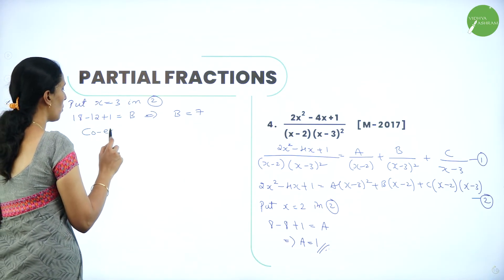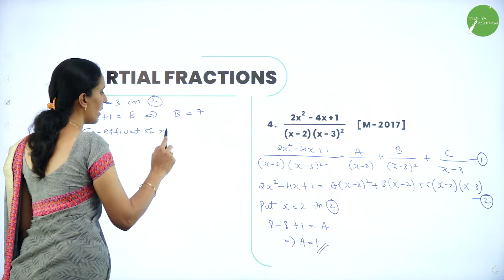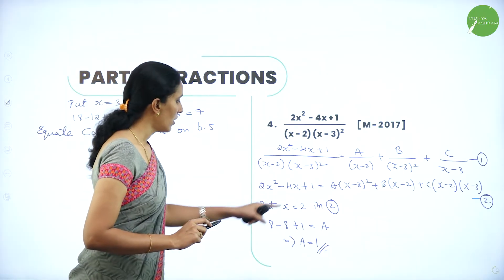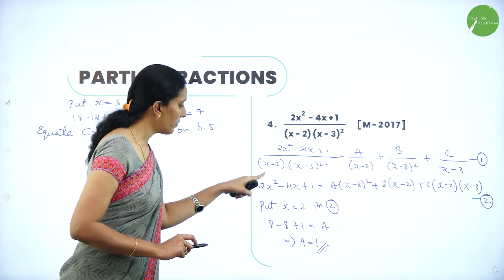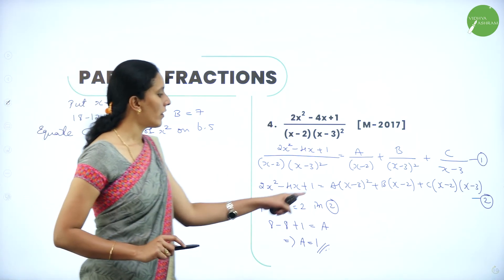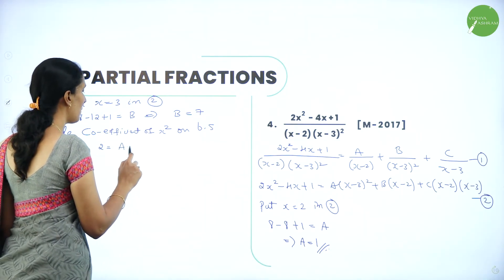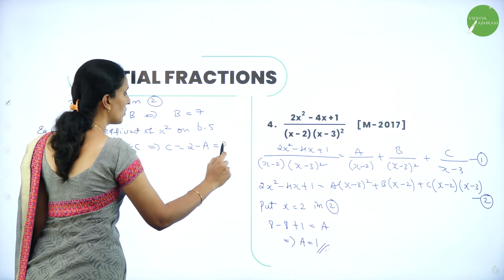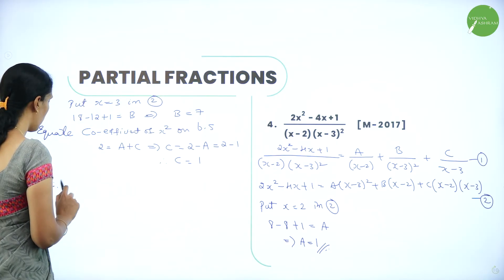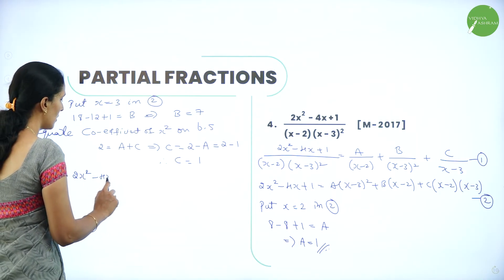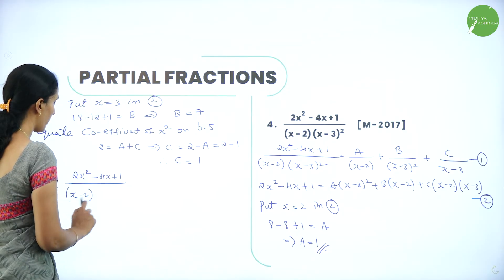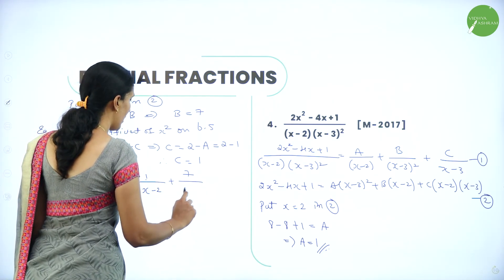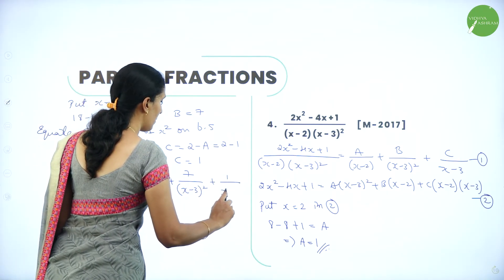Next, equating coefficients of x² on both sides: the left-hand side has coefficient 2, and the right-hand side gives A + C. So 2 = A + C, meaning C = 2 − A = 2 − 1 = 1. Therefore, (2x²−4x+1)/[(x−2)(x−3)²] = 1/(x−2) + 7/(x−3)² + 1/(x−3).